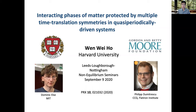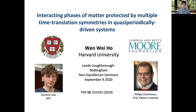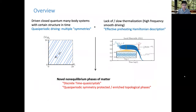It's quite a mouthful, but I'll explain exactly in what sense these interacting phases of matter are novel and non-equilibrium, and in what sense they are protected — in the usual sense like in equilibrium physics — and how symmetries play a role in defining them. This is work done in collaboration with Dominic Els at MIT and Philip Dimitrescu at CCQ and FedRN New York. The overview is that there can be novel non-equilibrium phases of matter — for example, discrete time quasi-crystals, which are generalizations of discrete time crystals — and new topological phases arising from quasi-periodic driving, as well as how these phases are protected in an effective pre-thermalization description.